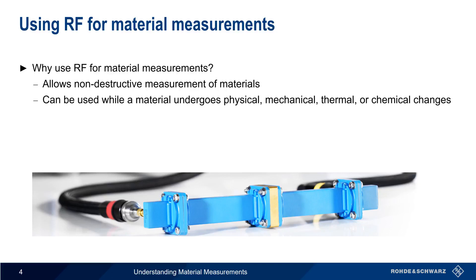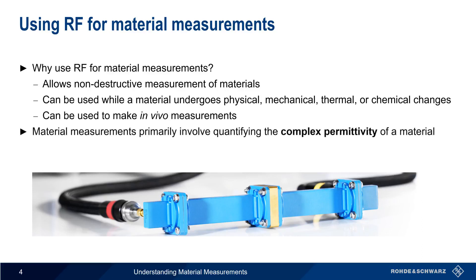A special case of this is making in vivo measurements — that is, making measurements on living organisms and tissues. The process of using RF to make material measurements involves quantifying something called the complex permittivity of a material. So let's start by talking about what we mean by permittivity.